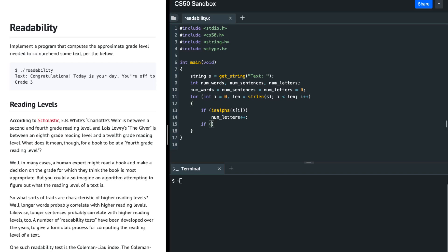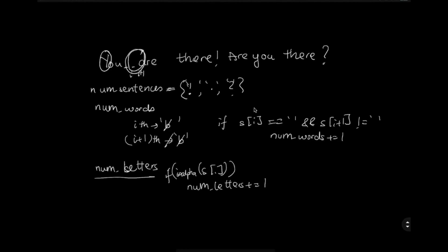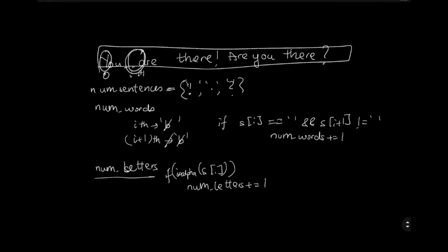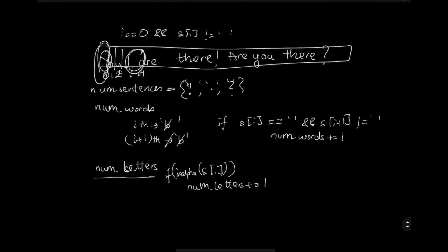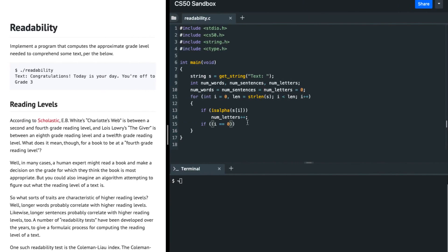If i is zero, this is a special case. When i is zero, we're at the very first character of the array. If i is zero and s[i] is not equal to a blank space, then I can consider that I have started a word here, so I'm going to increment the number of words by one.